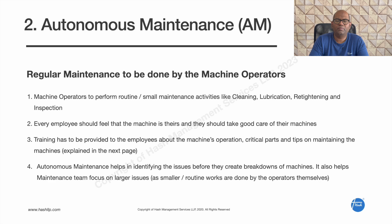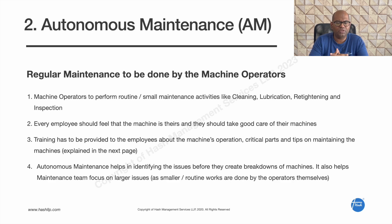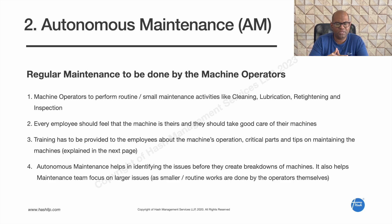The second pillar is Autonomous Maintenance. Operators manage their own machines through daily cleaning, oiling, and greasing. This is called CLRI — Cleaning, Lubrication, Retightening, and Inspection. CLRI is the common term used in autonomous maintenance.